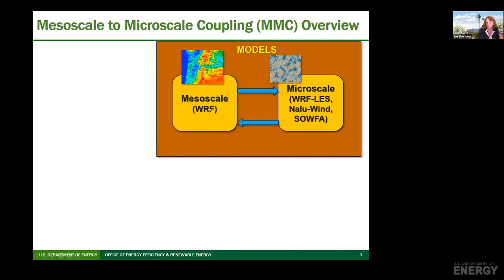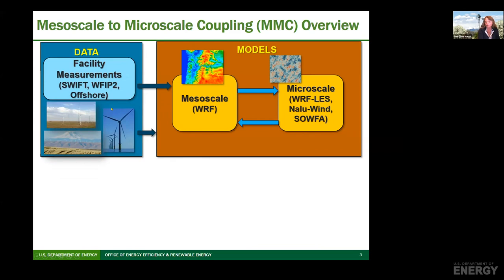So how do we model across these scales? We've been challenged to couple the mesoscale — which has the boundary conditions of the global scale — to the microscale or wind plant scale. For the mesoscale we're using the Weather Research and Forecasting model. For the microscale we've been using multiple resolutions on the order of 100 meters and below within large eddy simulation — WINDSOFA and moving to AMREX now. We start with data. We want to model the real atmosphere, so we chose real data — beginning with flat terrain at the SWIFT facility in Texas, moving toward complex terrain leveraging data collected by the Wind Forecast Improvement 2 project, and now moving toward the offshore environment.